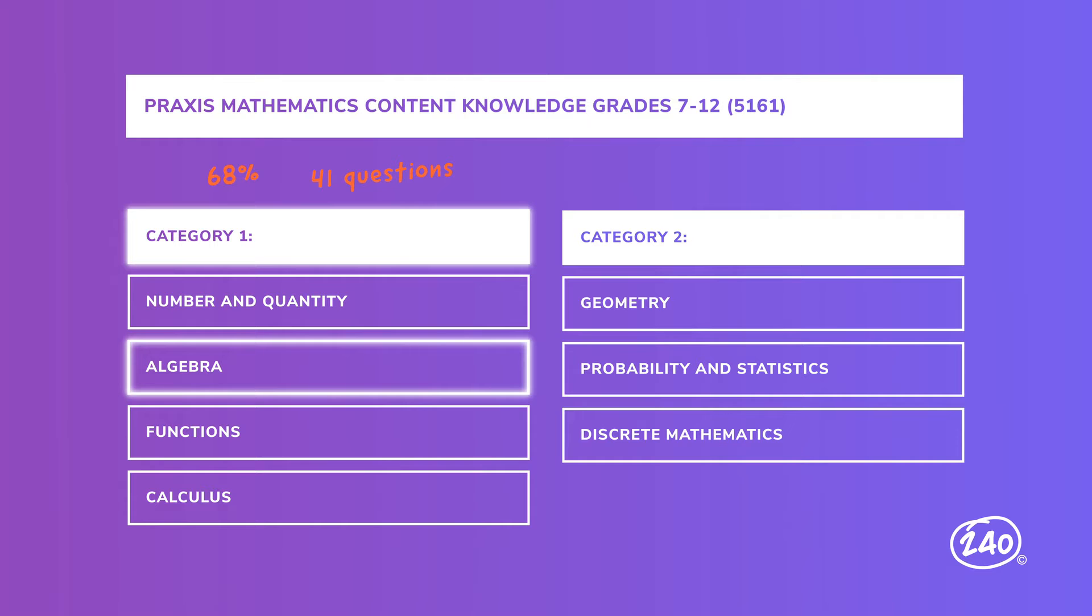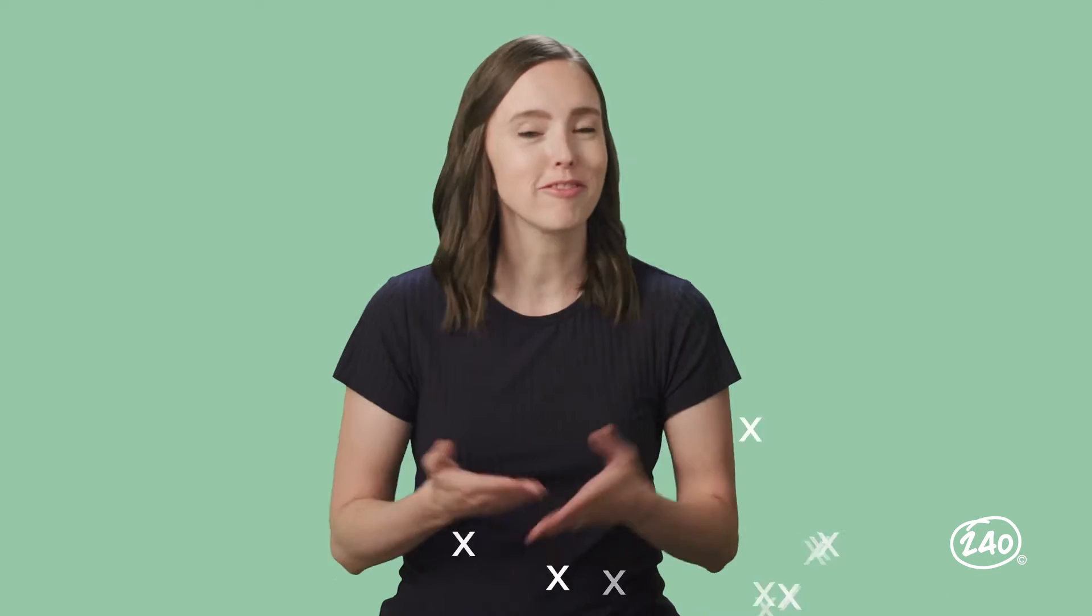So for example, you might be given a problem and need to use the order of operations to solve for the correct answer. Trying to solve the problem without using the order of operations would leave you with the wrong answer, so it's all about knowing which step to do first. Moving on to our second subcategory, algebra. You may already know what's coming here. Find x. Find x over here. Find x over there. Find x everywhere.